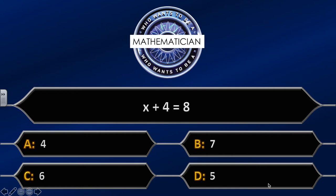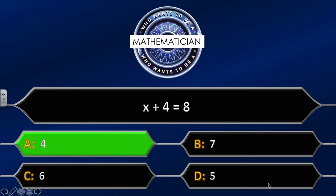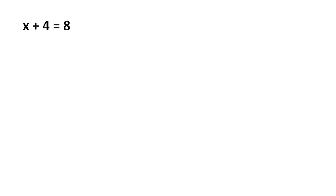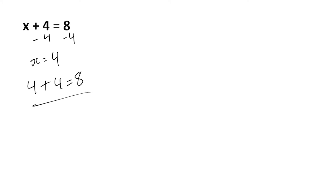The correct answer is A, of course, four. Question one was relatively straightforward — you need to undo the equation by minusing four from both sides. Eight minus four gives us four, so x is equal to four. We can always double check our answer by putting it back into the equation: four plus four equals eight. And that's our final answer.